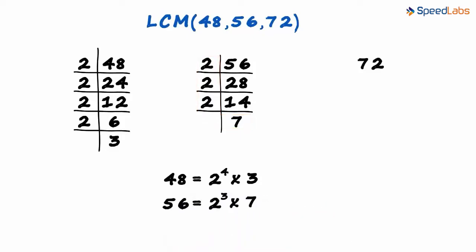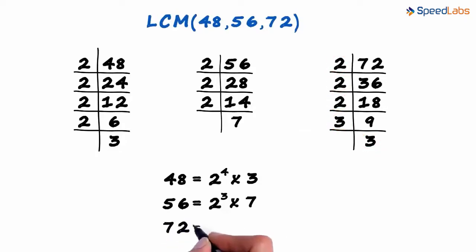Why don't you try solving for the prime factors of 72? The prime factorization process for 72 would look something like this. So 72 can be written as 2 cubed multiplied by 3 squared.